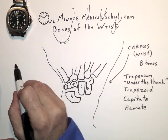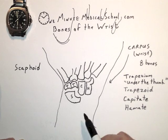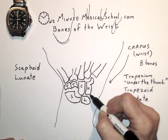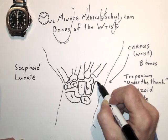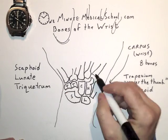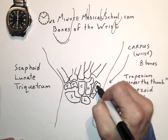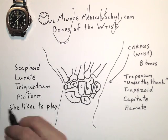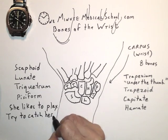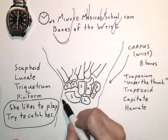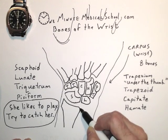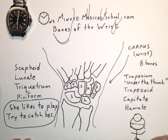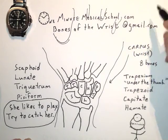In the proximal row is the scaphoid on the thumb side, then the lunate. Next comes the triquetrum underneath the pisiform. 'She likes to play, try to catch her' is a memory device to know the eight bones, which rest on the radius on the thumb side and the ulna.